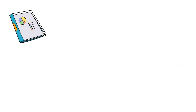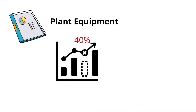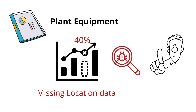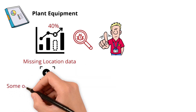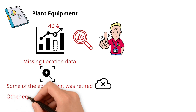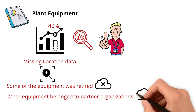Here is an example. Say you are working on a project with plant equipment and profiling showed that 40% of the equipment has missing location data. This looks like a clear data quality issue, right? But not exactly. Without rules, we are missing the context. Some of the equipment was retired, so location data was not needed. Other equipment belonged to partner organizations or was managed in a different system altogether, so location info was not required.